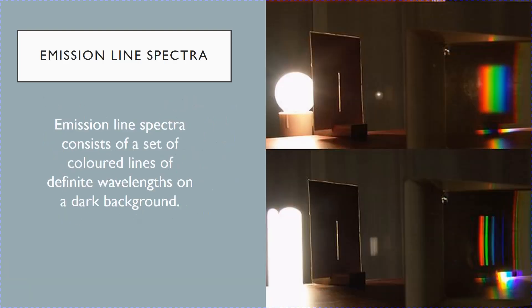But what if there is a phenomenon that will provide not a continuous spectrum but only a few discrete wavelengths? What would this prove? This phenomenon is known as line spectra. There are two types of line spectra: emission line spectra and absorption line spectra.